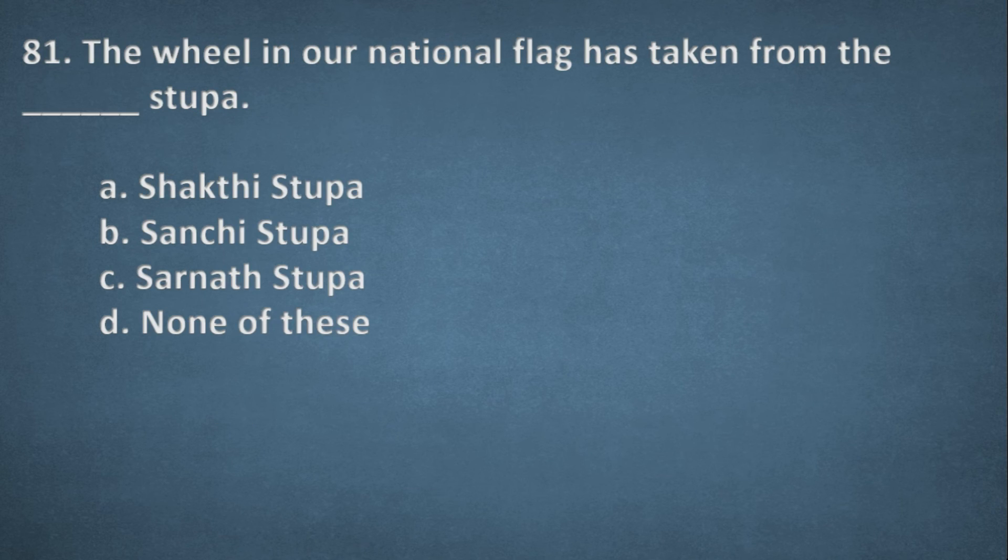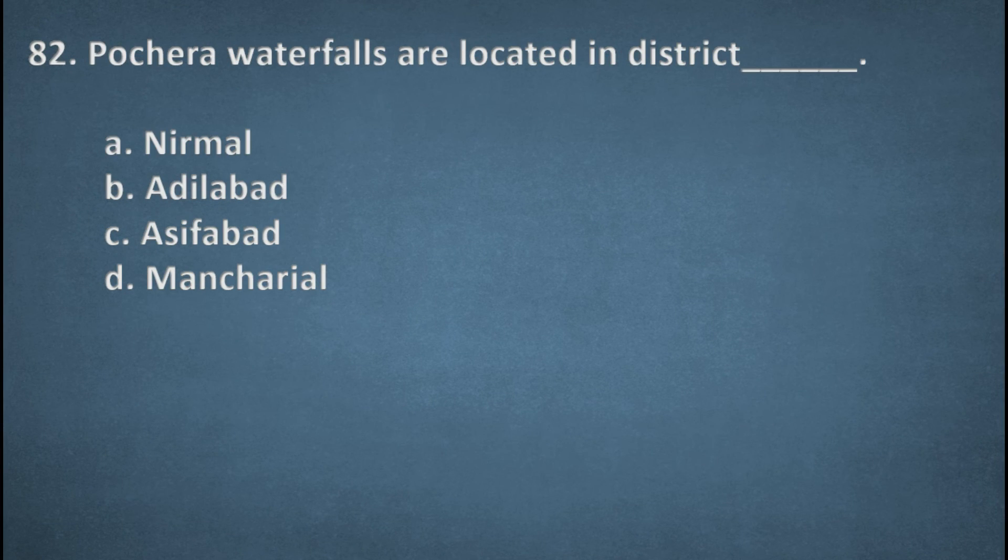Next one. The wheel in our national flag has taken from the Stupa. Options: Shakti Stupa, Sanchi Stupa, Sarnath Stupa, None of these. The right option, C, Sarnath Stupa. Next one. Pochara waterfalls are located in district. Options: Nirmal, Adilabad, Asifabad, Mancherial. Right option, B, Adilabad.